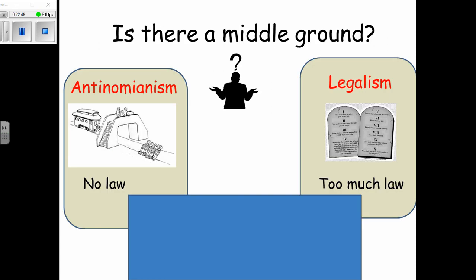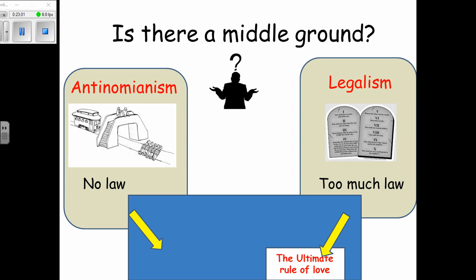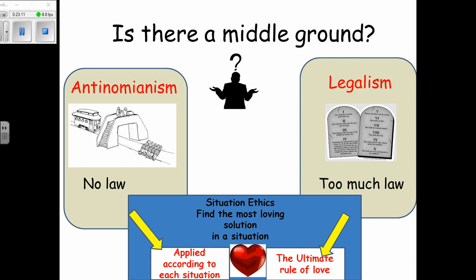Situation ethics is partly anti-nomianist and partly legalist: partly legalist because there is still one law, the law of love, and partly anti-nomianist because the actual action depends on the situation. Situation ethics means: find the most loving solution in a situation.